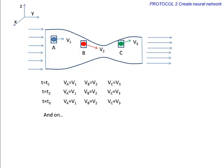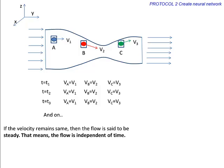If the velocity remains same, then the flow is said to be steady. That means, in this case, the flow velocity is independent of time or we call it as a steady flow.